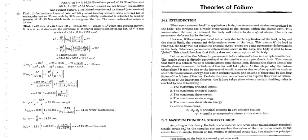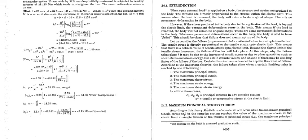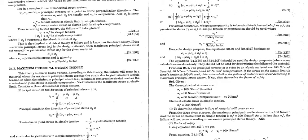Let us first discuss the maximum principal stress theory. From the name itself it is clear — if in a certain material the principal stress reaches its maximum value, whether tensile or compressive, that will be the root cause of failure. Let us assume we have a three-dimensional stress system, which we studied in the 3D state of stress and strain, where we have σx, σy, and σz as three perpendicular stresses.